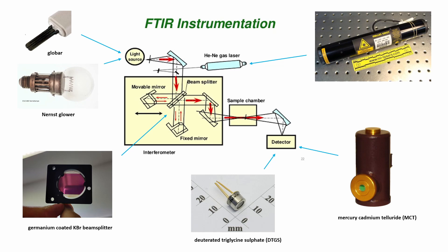Within the interferometer, the beam is split in half using a germanium-coated potassium bromide beam splitter, as both of these materials are invisible to infrared radiation. One of the beams then travels to a fixed mirror and returns to the beam splitter. The second beam travels to an adjustable mirror that we can move in order to change the optical path length between the two beams.